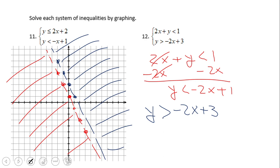If you end up with a picture like the one on the left — yes, you did a wonderful job, but it's a very interesting case. This is a case where the system of inequality has no solution. If you remember, that is the empty set. There is no region where the blue shading and the red shading overlap, so therefore there is no solution. This is a special case — most of the time you're going to get a solution.